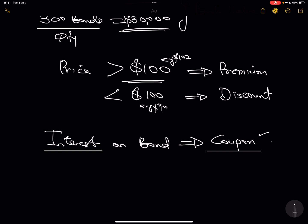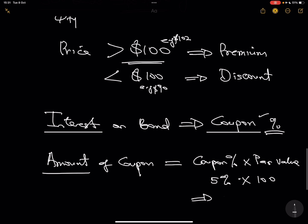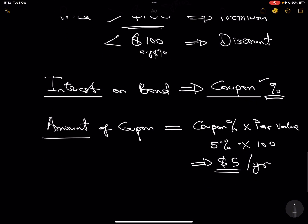The coupon is given as a percentage, just like normal interest. To calculate the amount: coupon amount equals coupon rate times par value. So the coupon rate times 100 gives you the coupon per bond. If the coupon rate is 5%, one bond will always give $5 as interest every year — that is the annual coupon. Some bonds have a semi-annual coupon, meaning you pay this every 6 months.